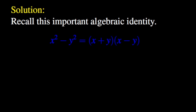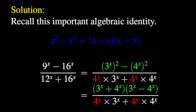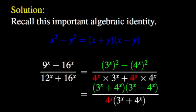We know that the difference of two squares, x squared minus y squared, is equal to the quantity x plus y times the quantity x minus y. We use this property to factorize the numerator as the quantity 3 to the power x plus 4 to the power x, times the quantity 3 to the power x minus 4 to the power x. Then we use the common factor 4 to the power x to factorize the denominator as 4 to the power x times the quantity 3 to the power x plus 4 to the power x.